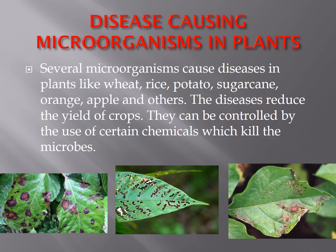Microorganisms cause diseases in plants like wheat, rice, potatoes, sugarcane, orange, apple, and others. These diseases reduce the yield of crops, and they can be controlled by the use of certain chemicals which kill the microbes. About these chemicals — different insecticides, bactericides, and weedicides — you have already learned in Chapter 1.